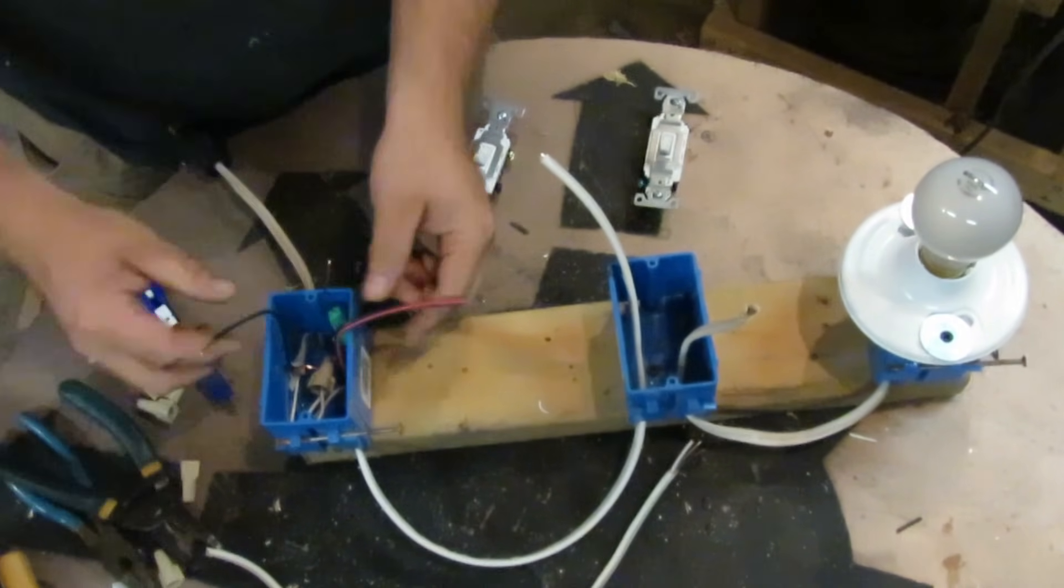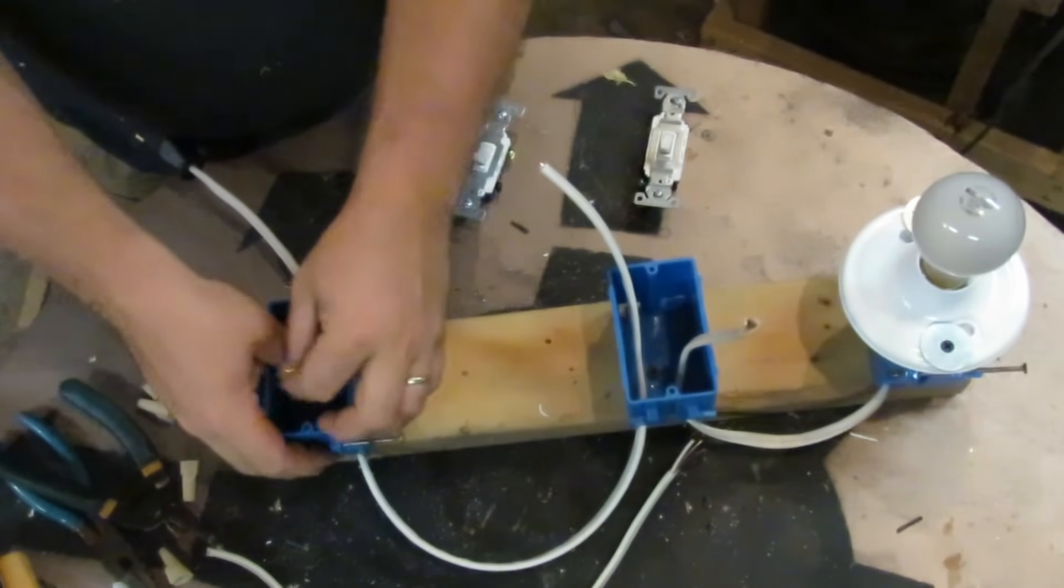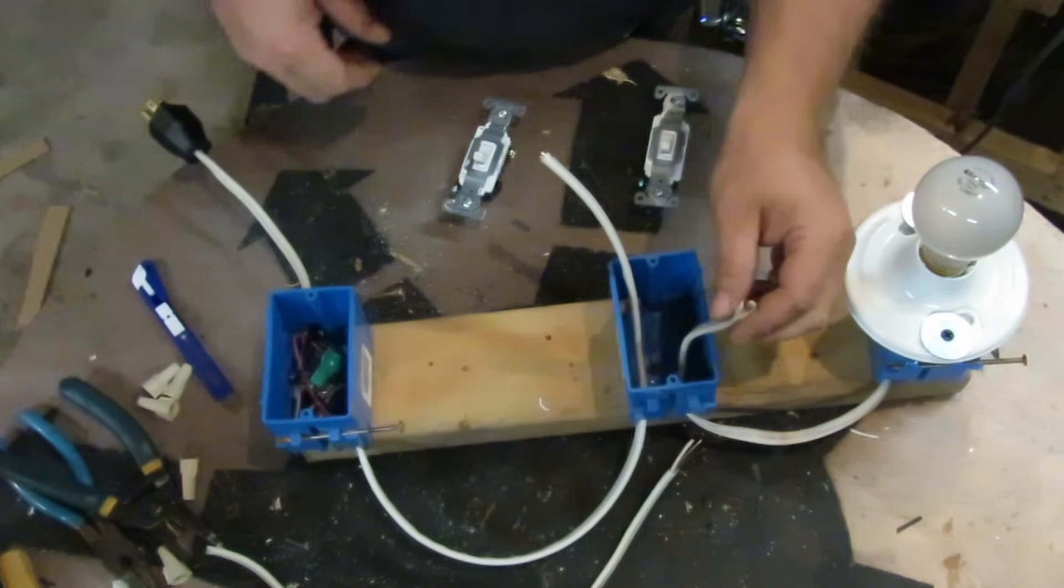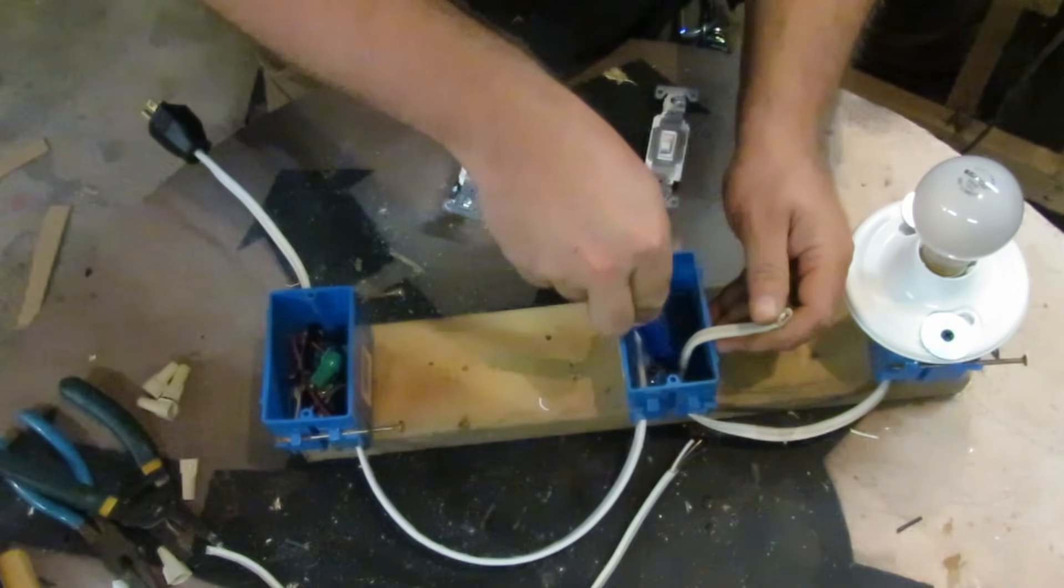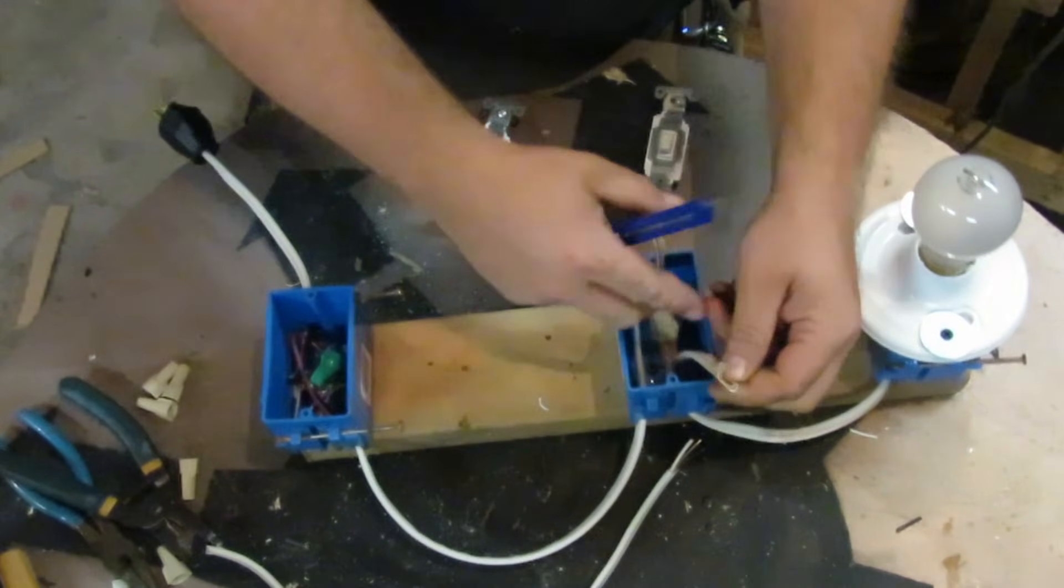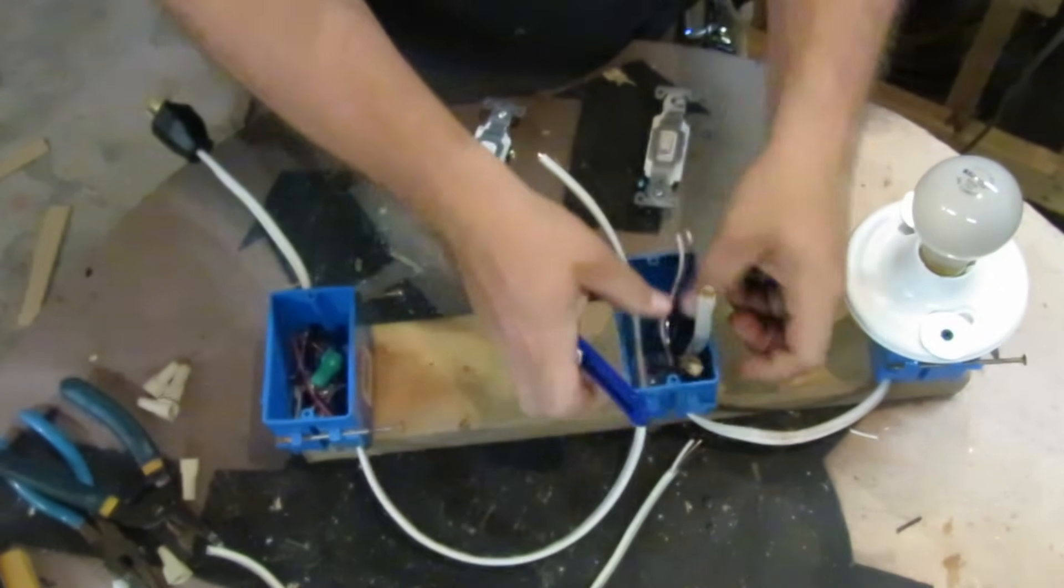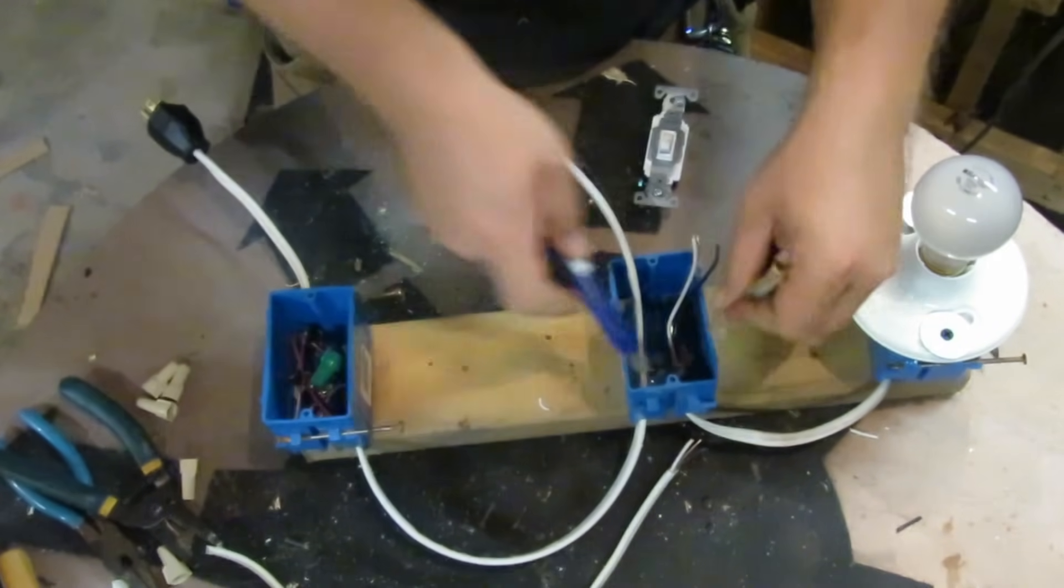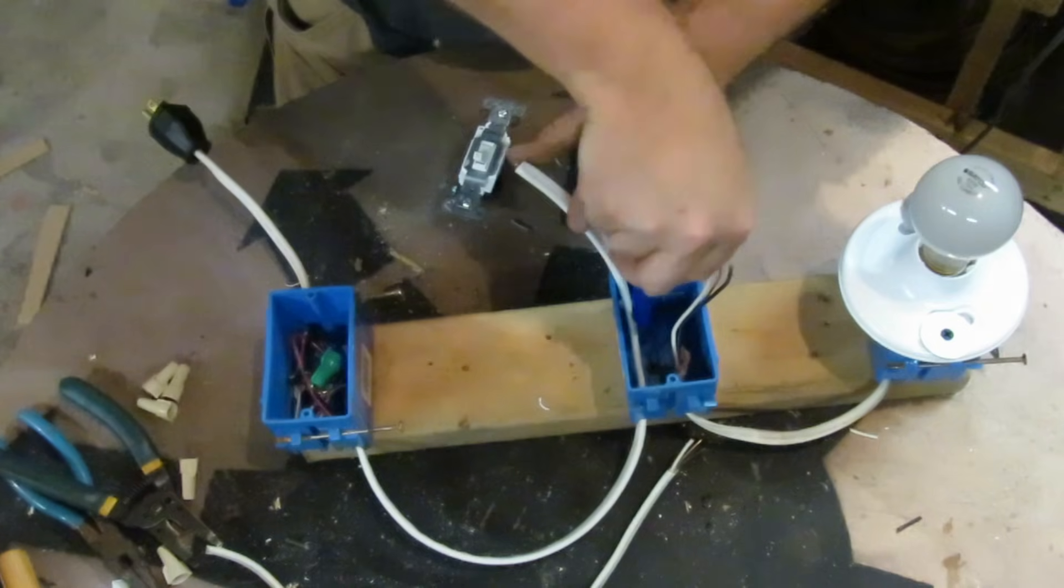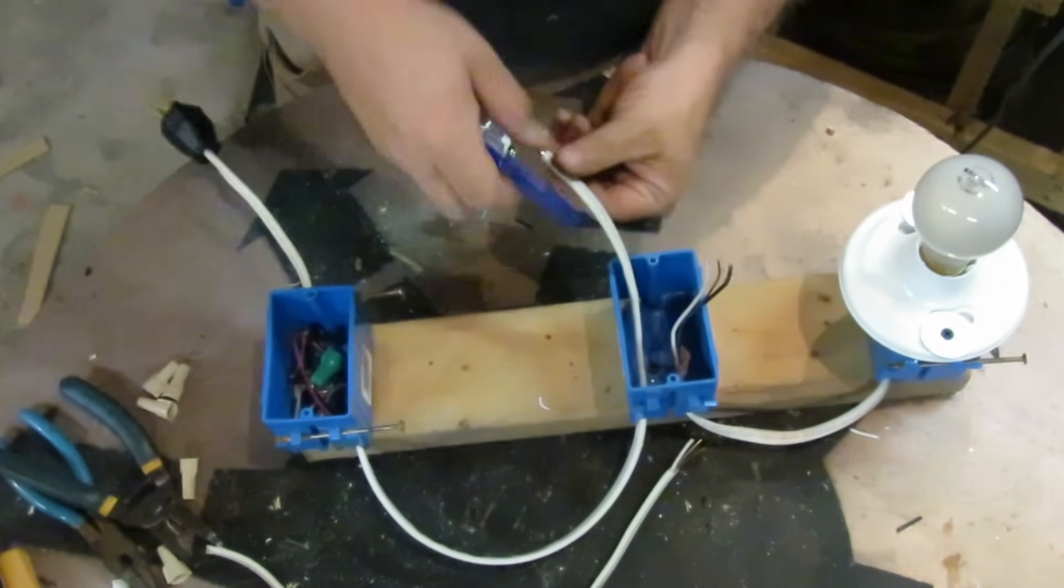You want to strip off your odd wire to show that that's the common wire, and then that box is done and you want to do the same thing with the other box. You have your switch line wire and your traveler wire.